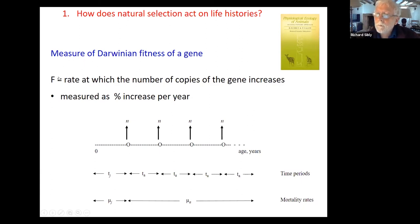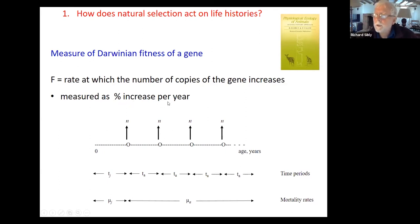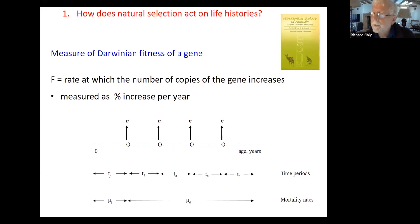Fitness is measured as the rate at which the number of copies of the gene increases, measured as the percent increase per year — rather like this wretched virus, where we're interested in the percent increase per week. So percent increase per year is the measure of fitness. The value of fitness depends on the properties of the carriers of the gene.